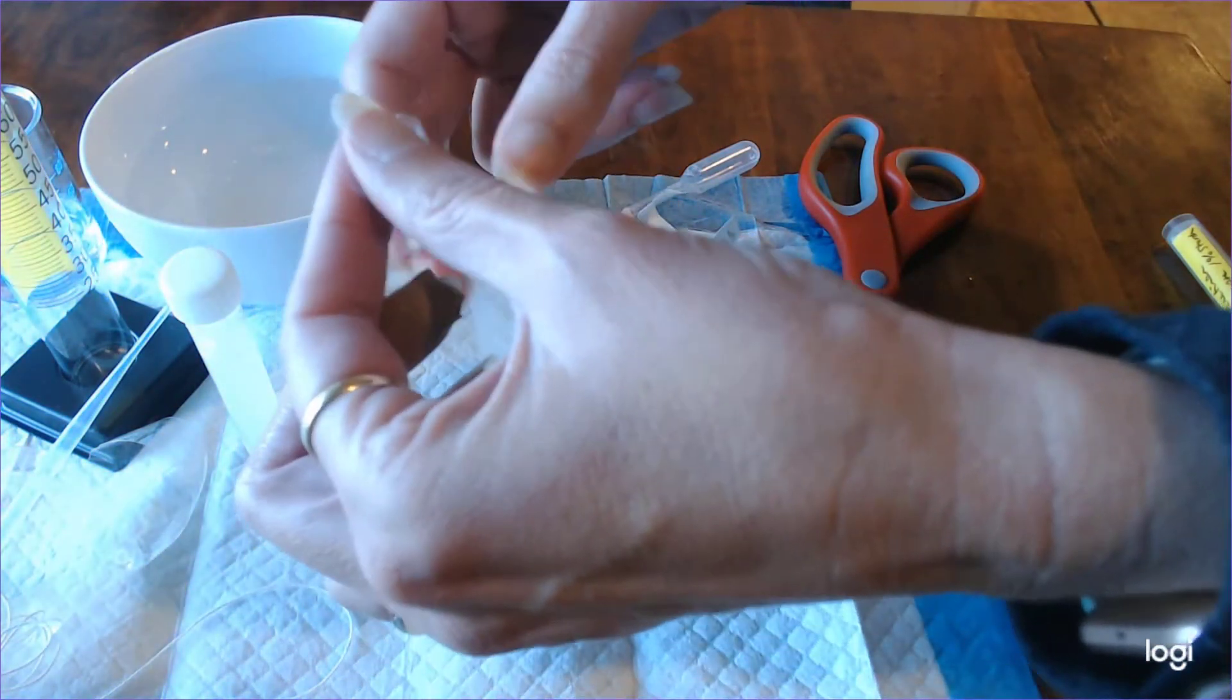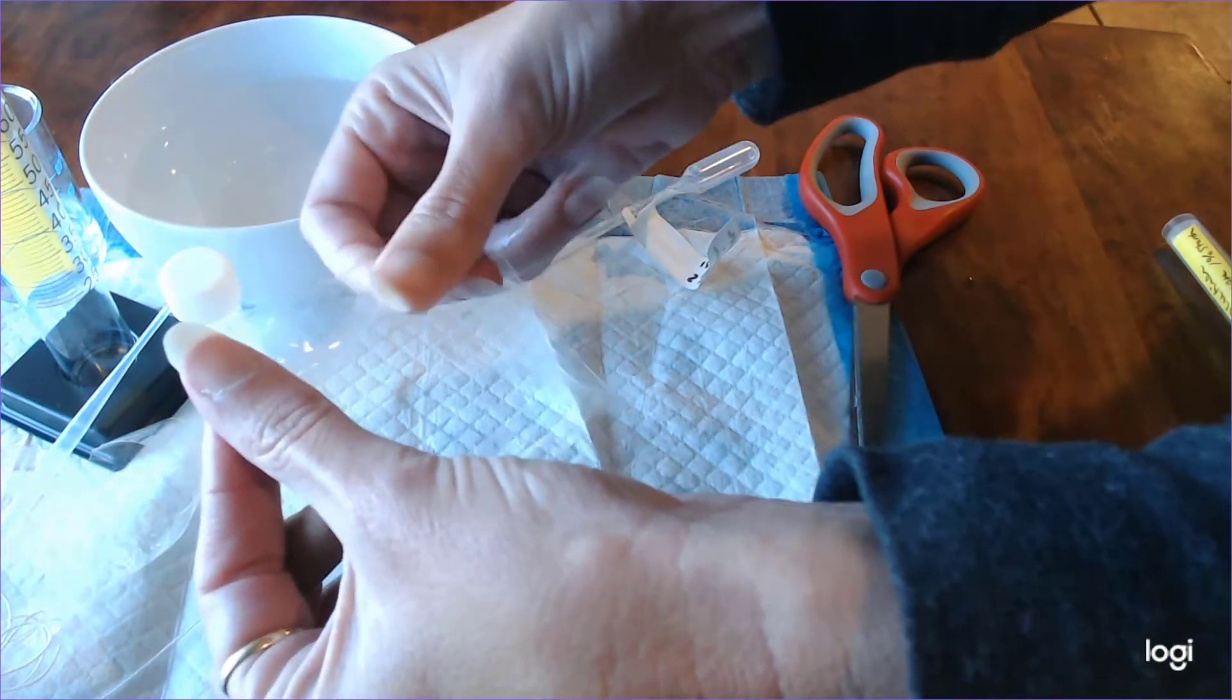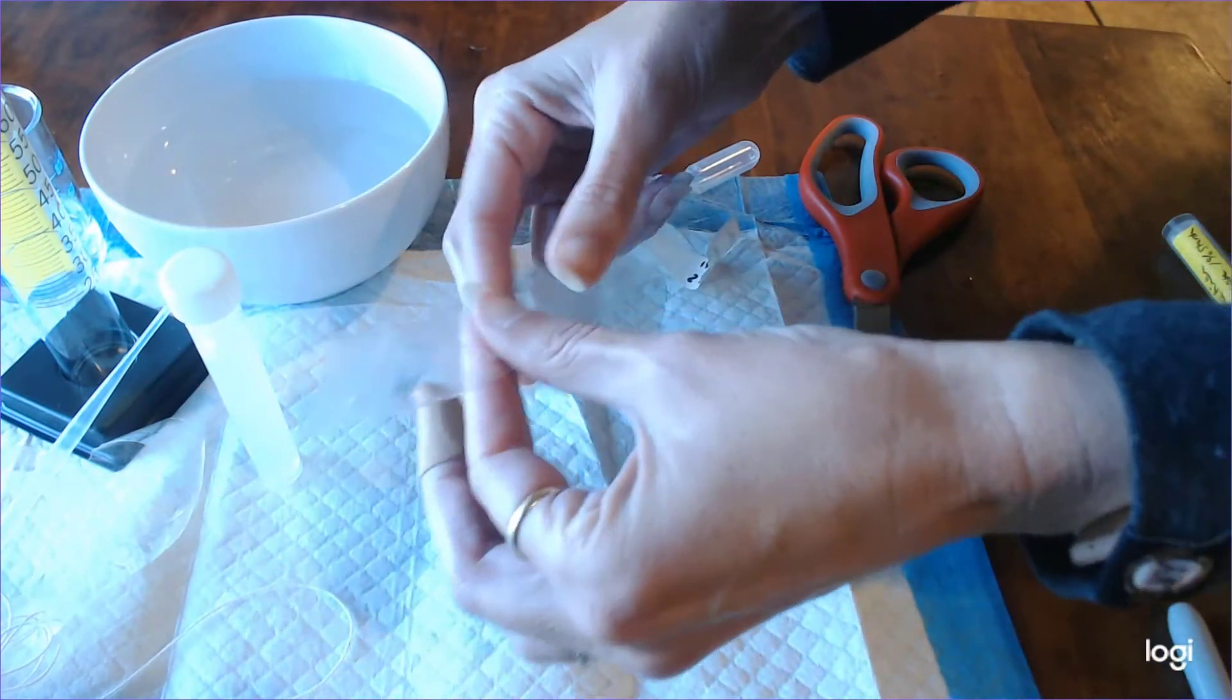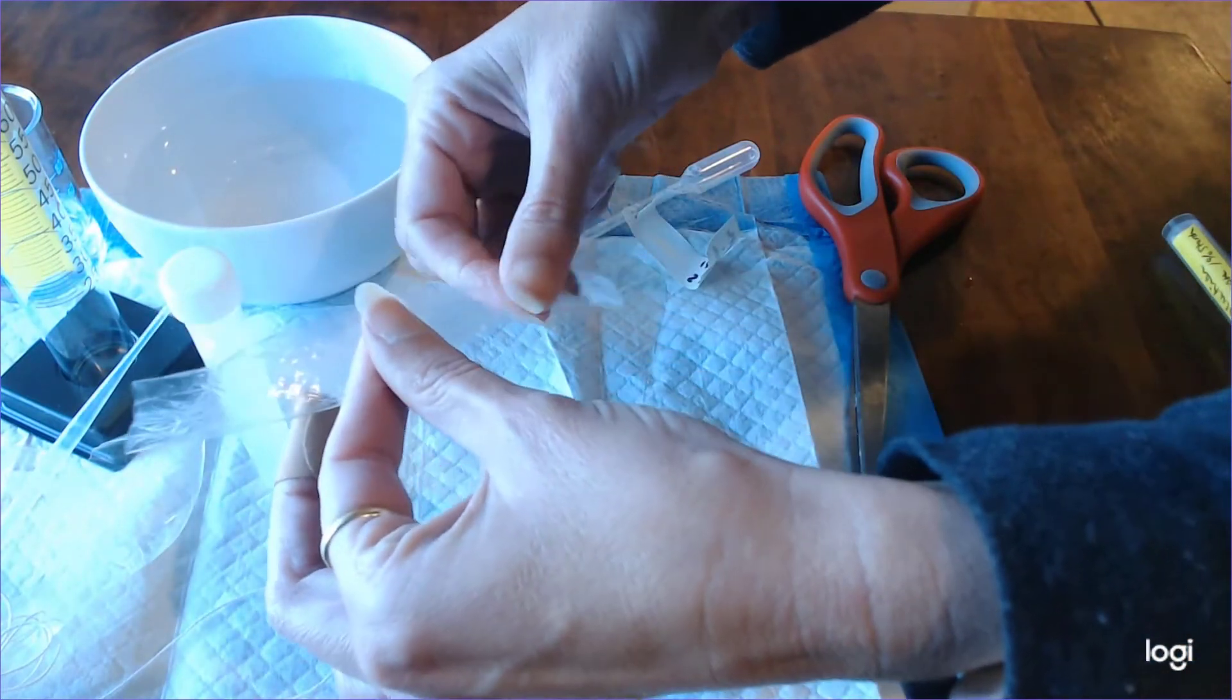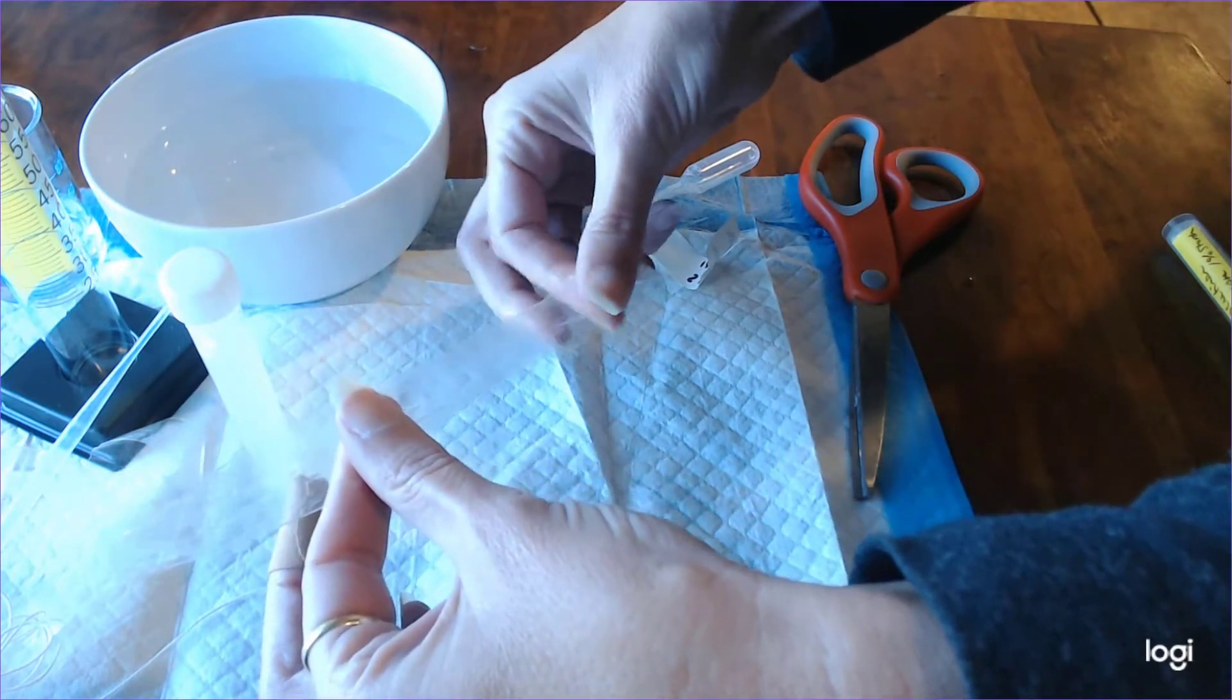So once you have one end separated like that, keep rolling the tubing in between your fingers and get good separation all the way down the length of the dialysis tubing so that both the top and the bottom have good openings to them.